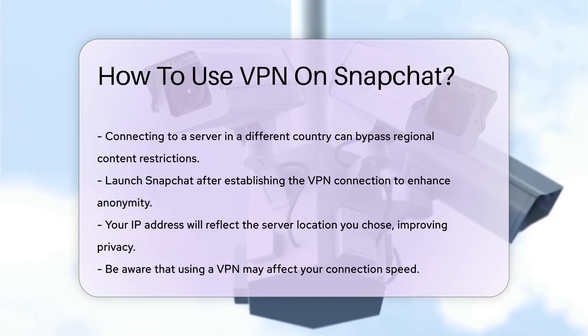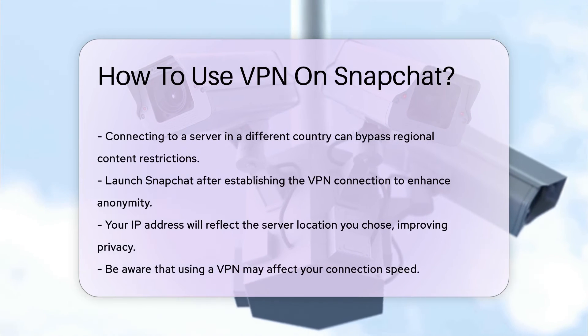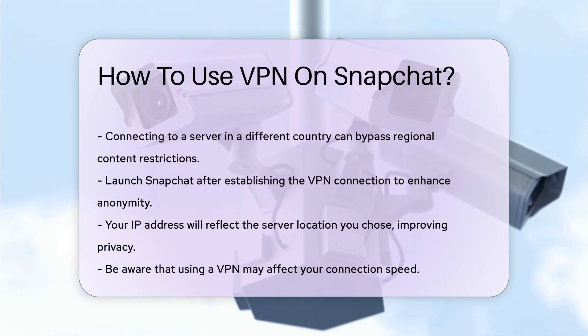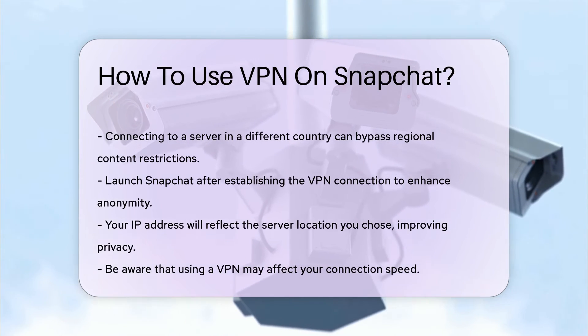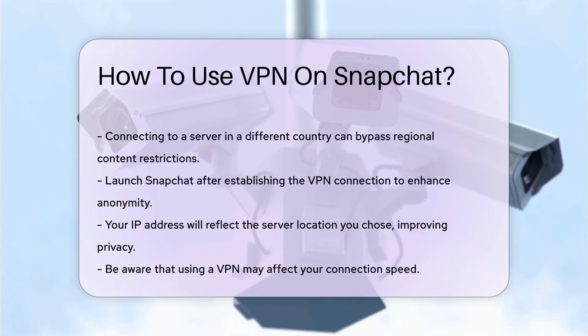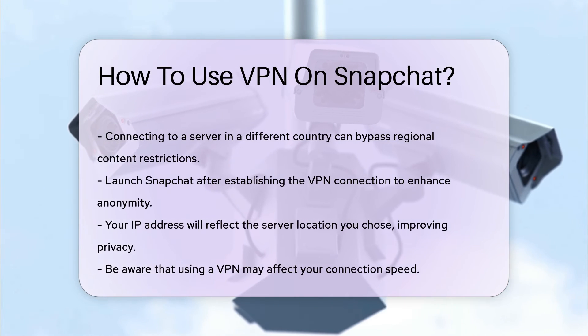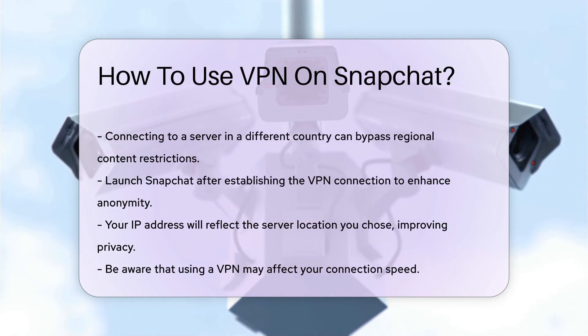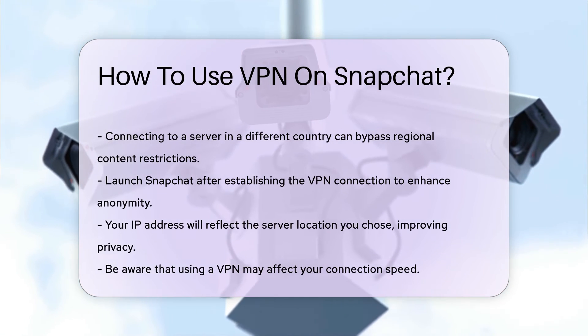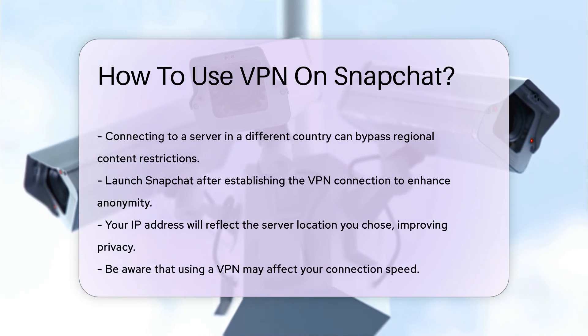After establishing the VPN connection, launch Snapchat. Your IP address will now appear as the server location you selected, enhancing your anonymity. This process can help bypass geographical restrictions that Snapchat may impose.